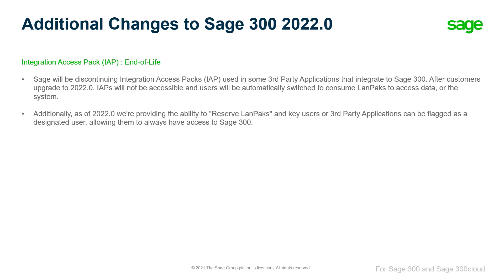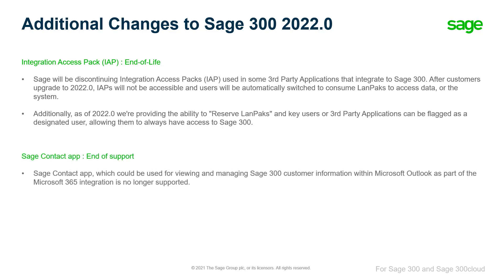Additionally, as of 2022.0, we're providing the ability to reserve Landpacks, and key users or third-party applications can be flagged as a designated user, allowing them to always have access to Sage 300. The Sage Contact App, which could be used for viewing and managing Sage 300 customer information within Microsoft Outlook as part of the Microsoft 365 integration, is no longer supported.